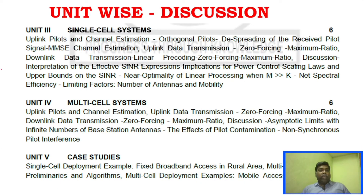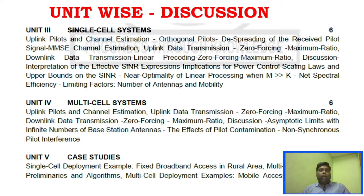Unit 3 is single cell systems and Unit 4 is multi-cell systems — these are the most important units. Key topics include uplink data transmission and downlink data transmission. De-spreading is also very important, and SNIR is another key area to focus on in these units.